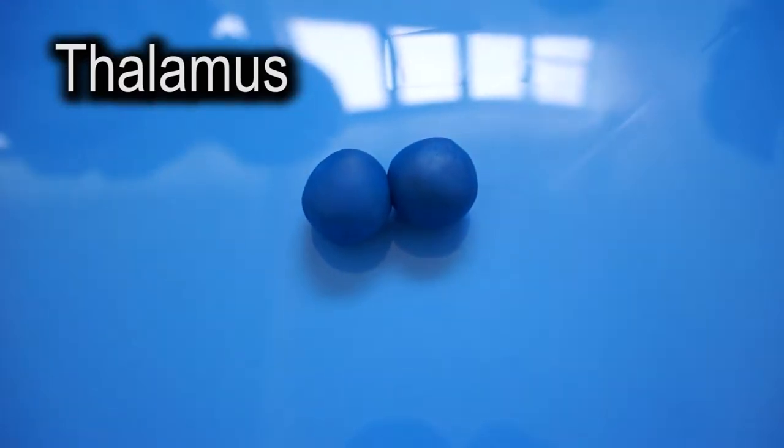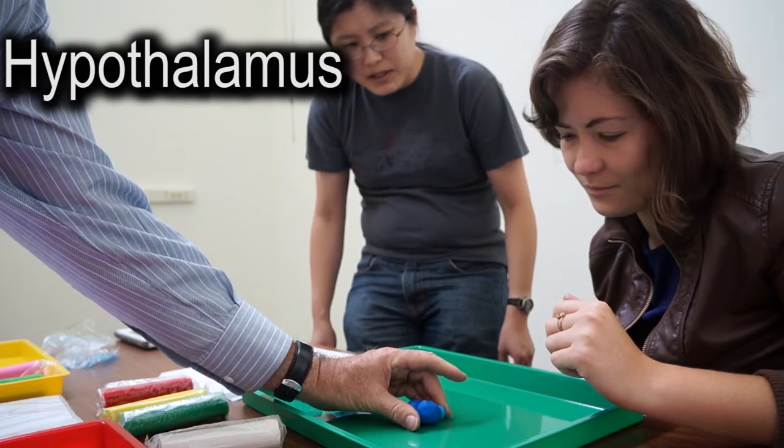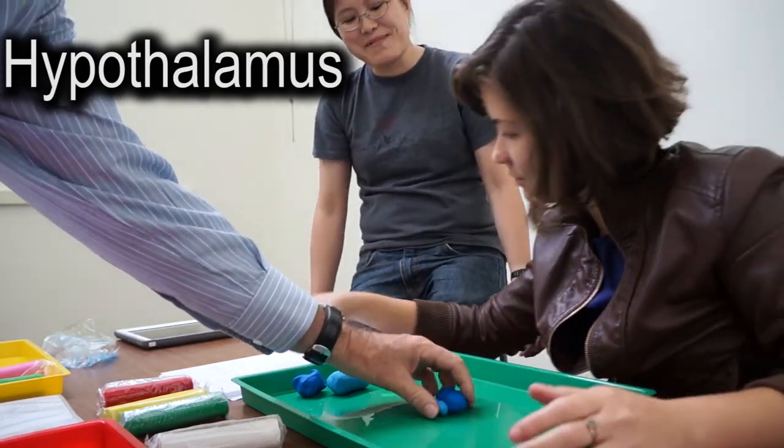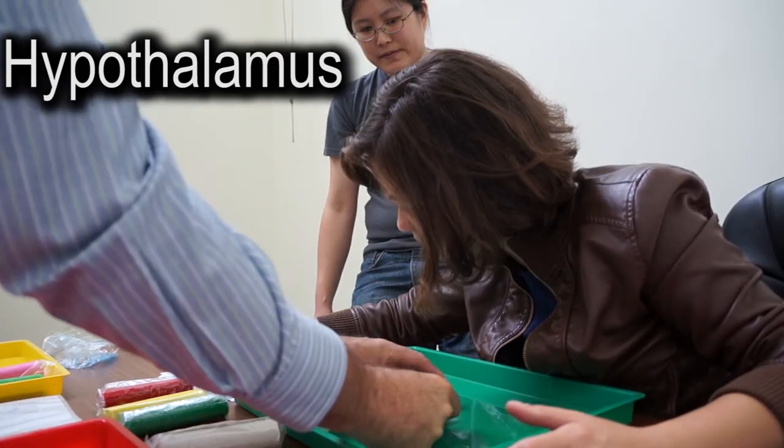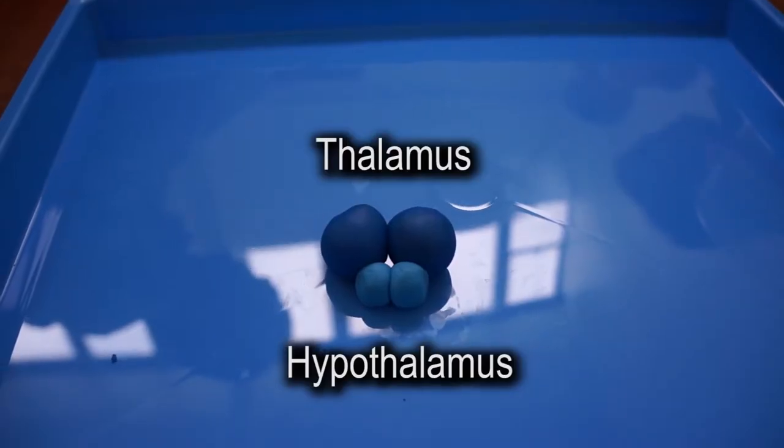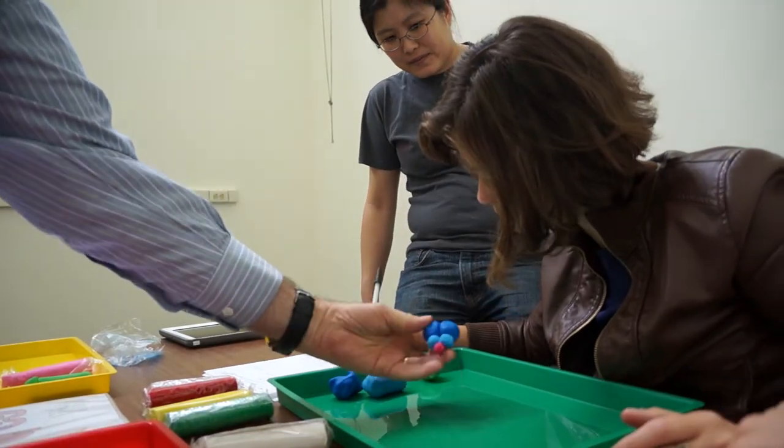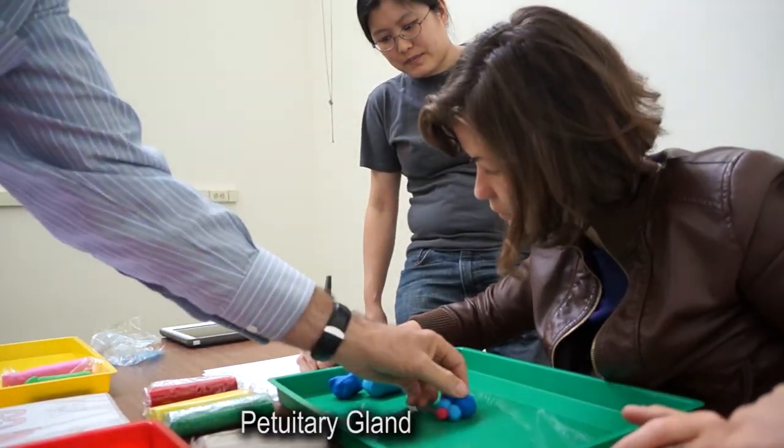This is the thalamus. Is it too big for this? No, no, that's fine. That's really big. I made it pretty big. You know what? We can use the extra one for the pituitary. Thalamus and hypothalamus. So there's our diencephalon and pituitary.